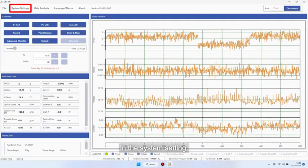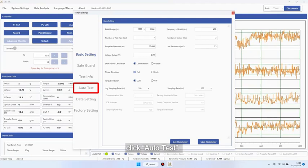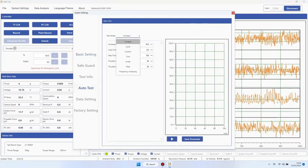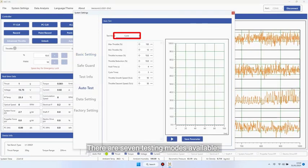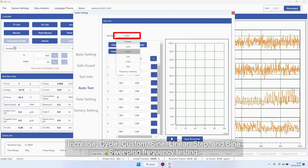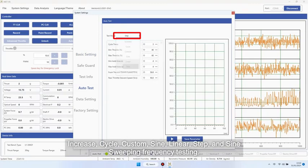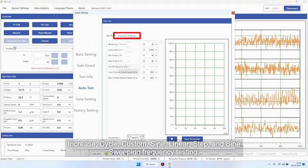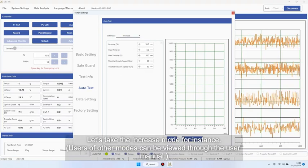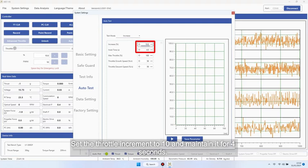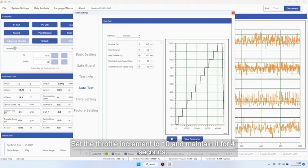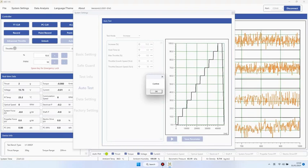In the system settings, click Auto Test. There are seven testing modes available: Increase, Cycle, Custom, Sign, Linear, Step, and Sign Sweeping frequency testing. Let's take the increase mode for instance. Set the throttle increment to 10 and maintain it for 4 seconds. After setting it, click Save.